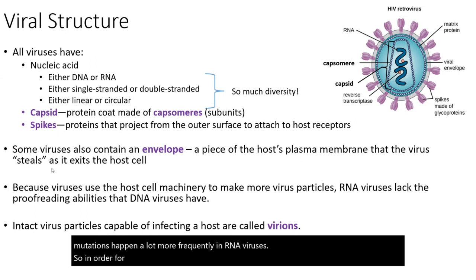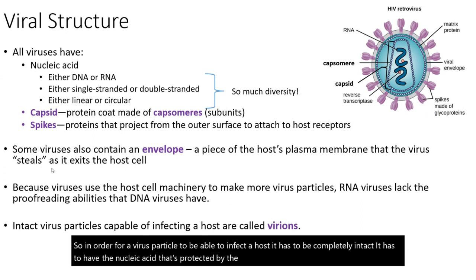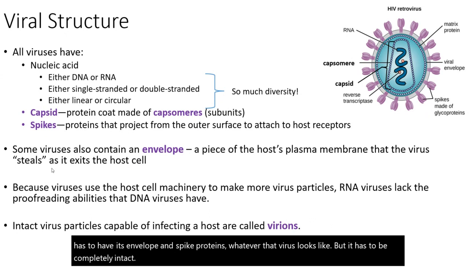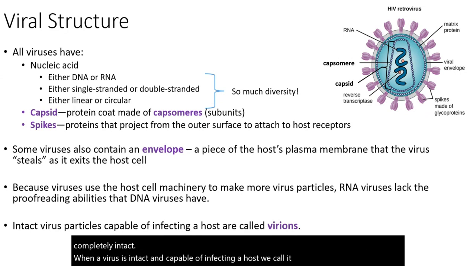In order for a virus particle to be able to infect a host, it has to be completely intact — it has to have the nucleic acid protected by the capsid, and if it's a more sophisticated virus, it has to have its envelope and spike proteins. When a virus is intact and capable of infecting a host, we call it a virion.